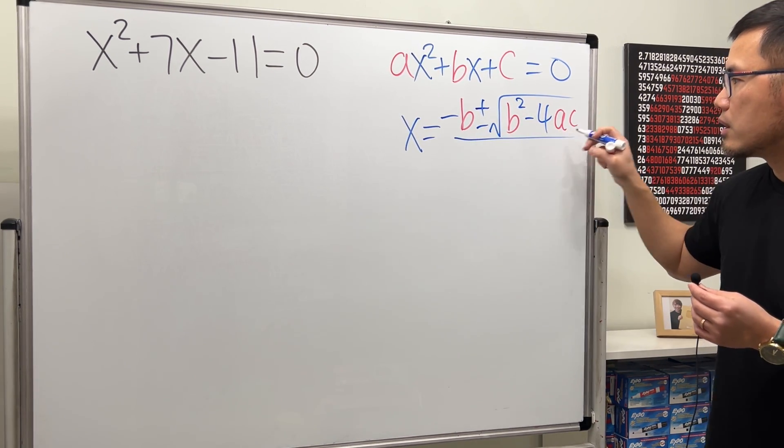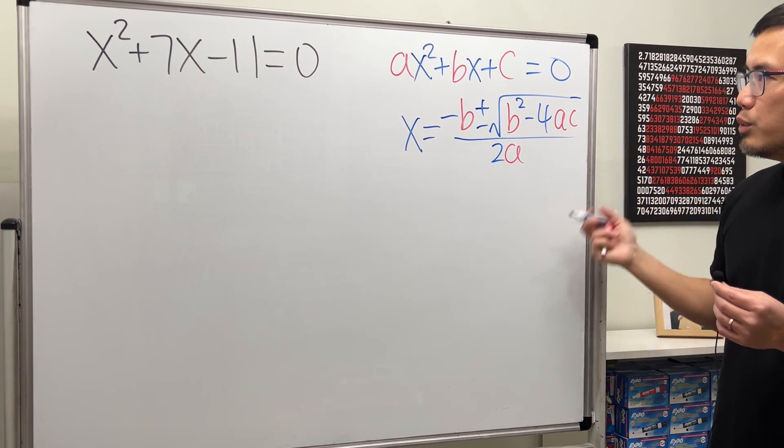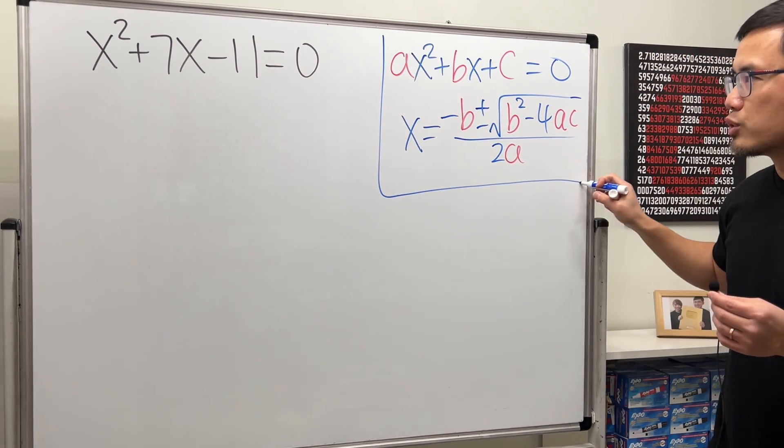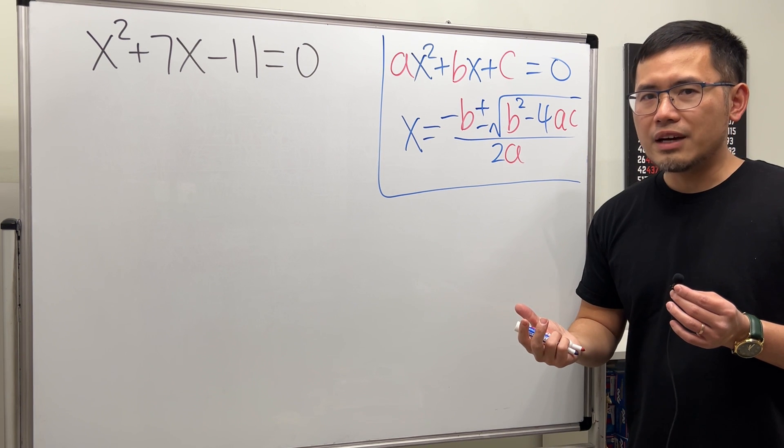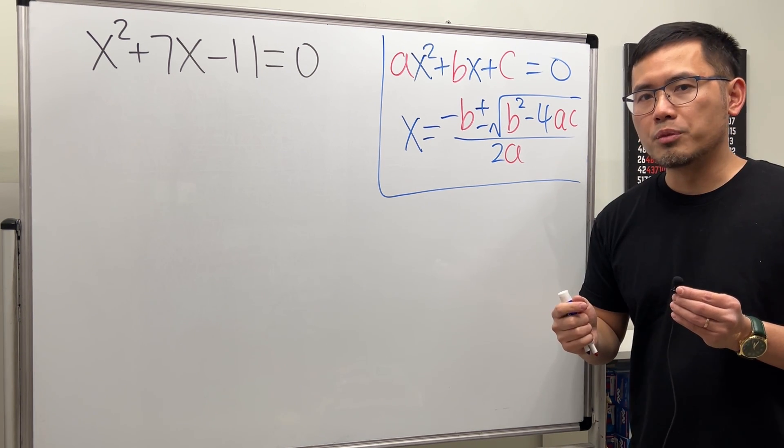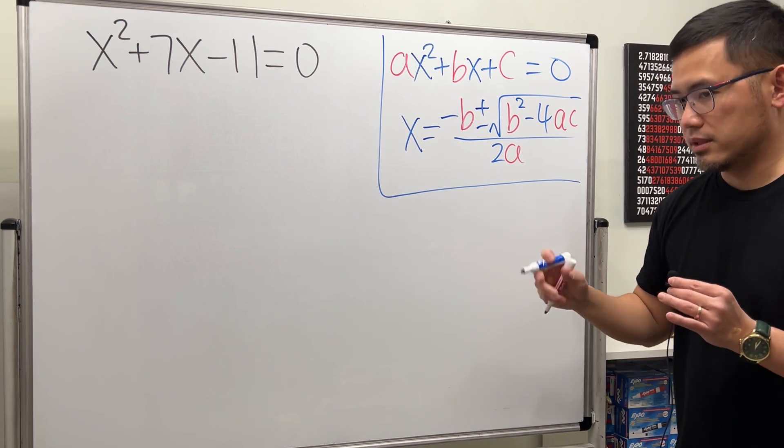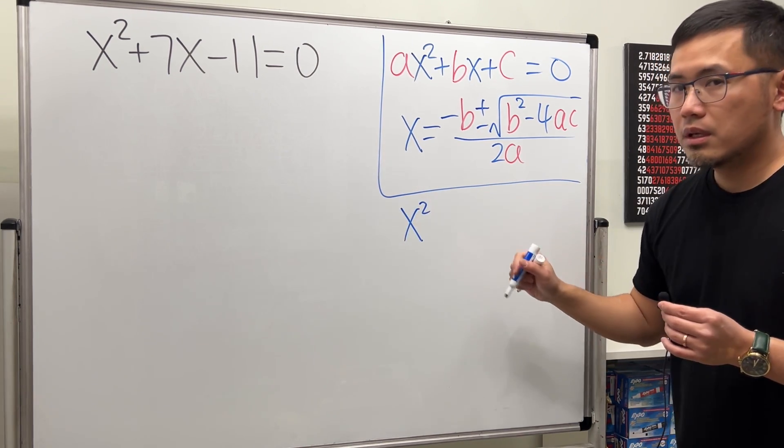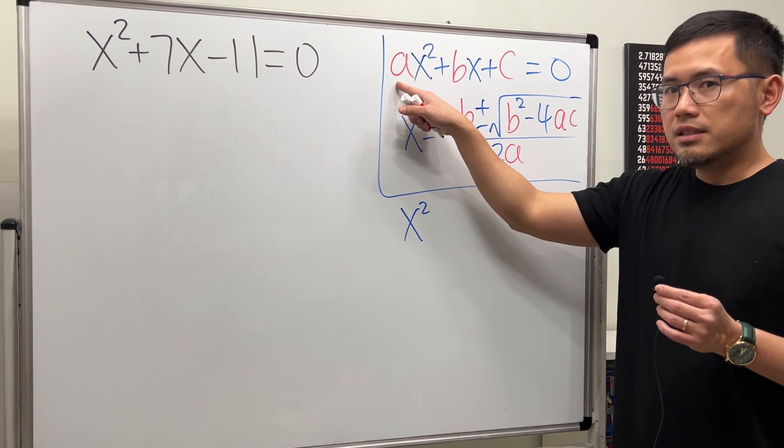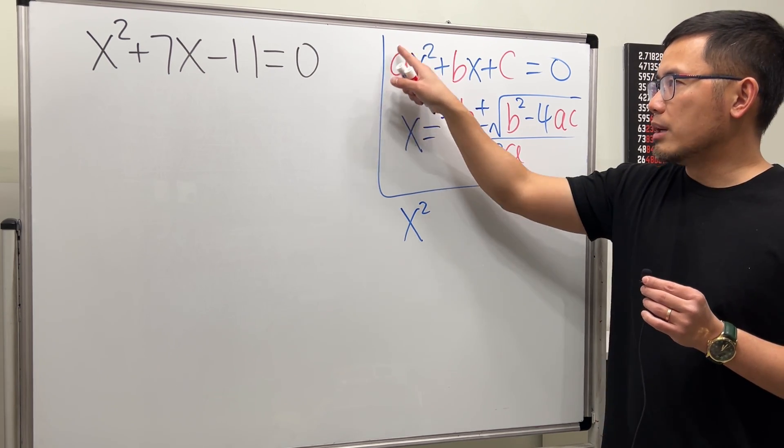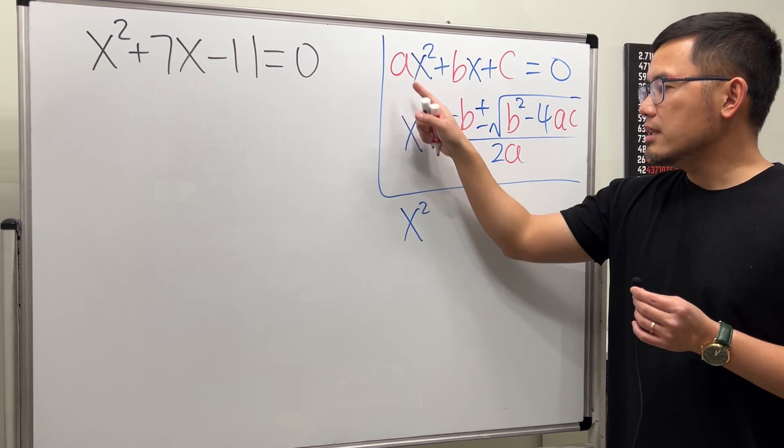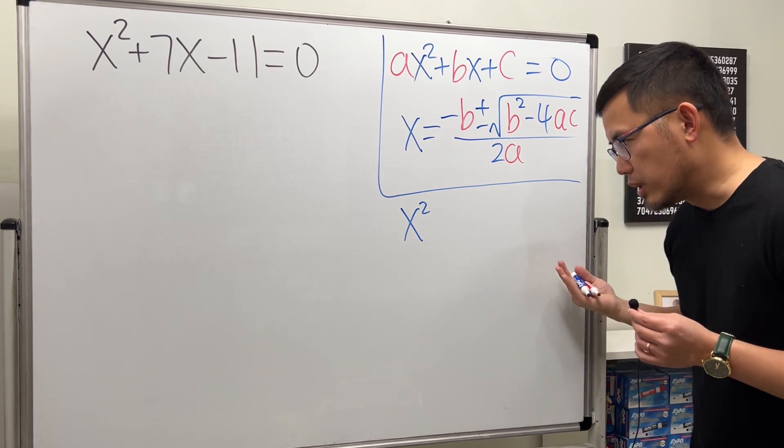The reason I said this is the classic quadratic formula is that you also have another version called the PQ formula. You can check that out in the description, but I'll write that down right here for you guys. This is the classic one. You have a general number a, but if the a is equal to one, then you can do the following.